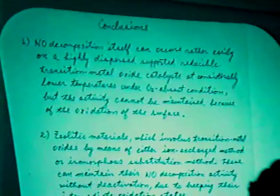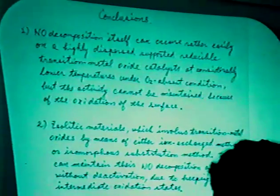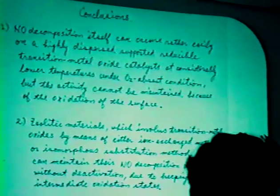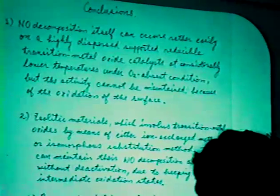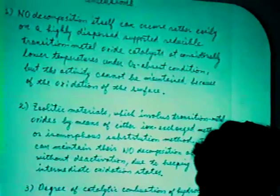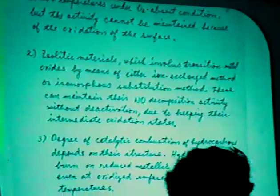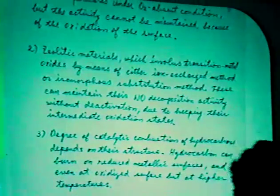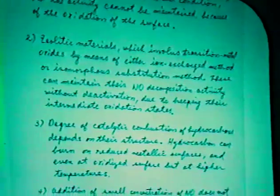So for the first point I can conclude: NO decomposes itself locally on a highly dispersed supported reducible transition metal oxide catalyst at considerably lower temperature under oxygen-absence conditions. But the activity cannot be maintained because of the oxidation of the surface. Zeolitic materials which involve transition metal oxide by means of either ion exchange method or isomorphous substitution method can maintain their NO decomposition activity without deactivation by keeping their intermediate oxidation state.